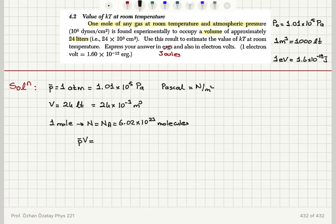Now using the ideal gas law, P bar V is equal to number of molecules, Boltzmann constant times temperature, we find that the KT should be P bar V divided by number of molecules. So we have 1.01 times 10 to 5 pascals multiplied by 24 times 10 to minus 3 meter cubed divided by Avogadro's number, 6.02 times 10 to 23.